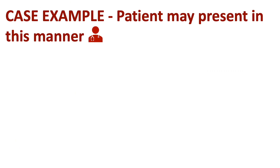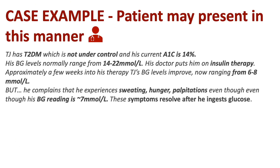Let's take a look at a hypothetical example. Here we have TJ. He has type 2 diabetes which is not under control, and his A1C is approximately 14%. His blood glucose levels normally range from 14 to 22 millimoles per liter. His doctor decides to put him on insulin therapy. Approximately a few weeks into his therapy, his blood glucose levels improved, now ranging from 6 to 8 millimoles per liter. But he complains that he experiences sweating, hunger, and palpitations, even though his blood glucose reading is 7 millimoles per liter. These symptoms resolve after he ingests glucose.